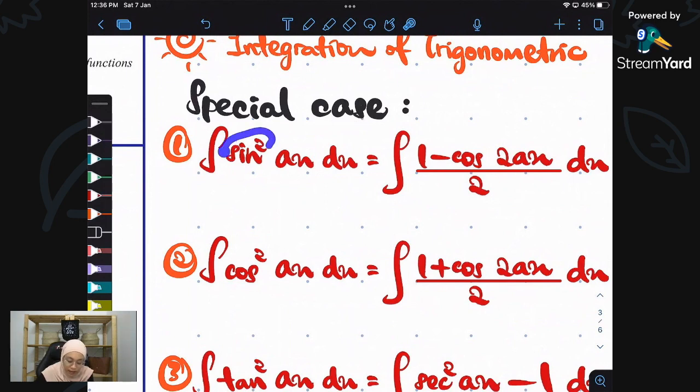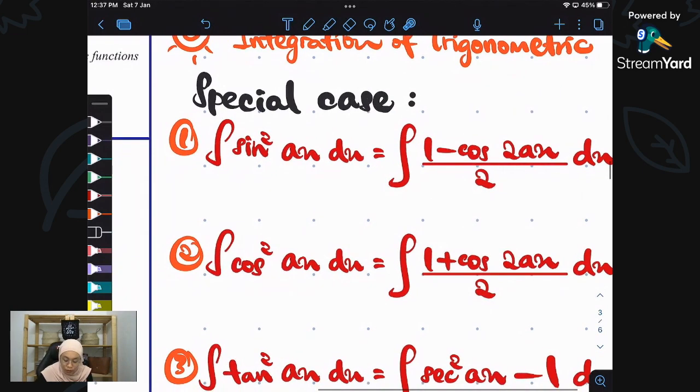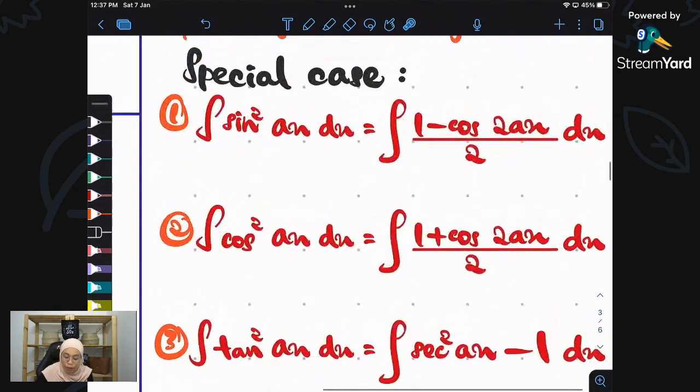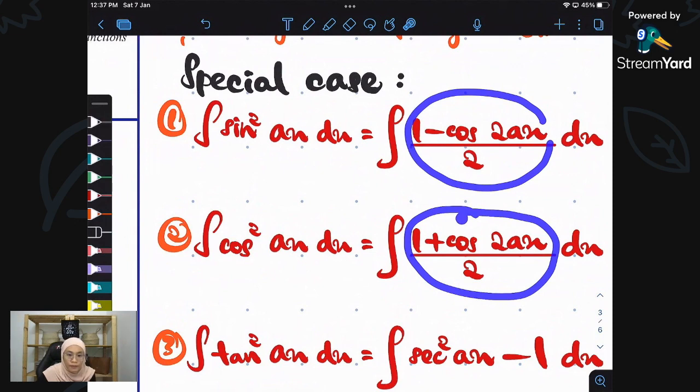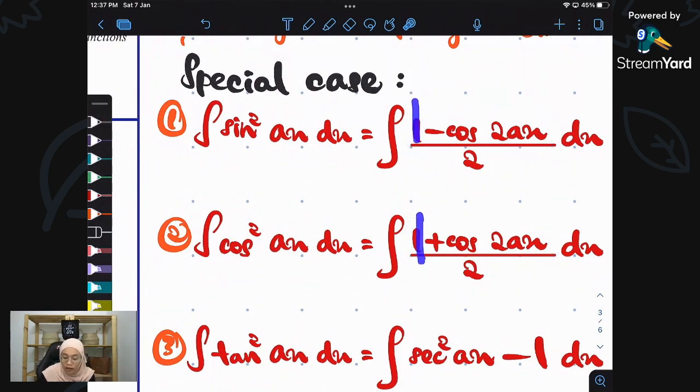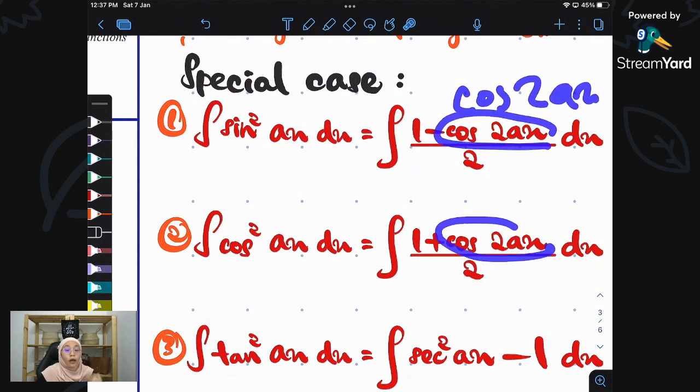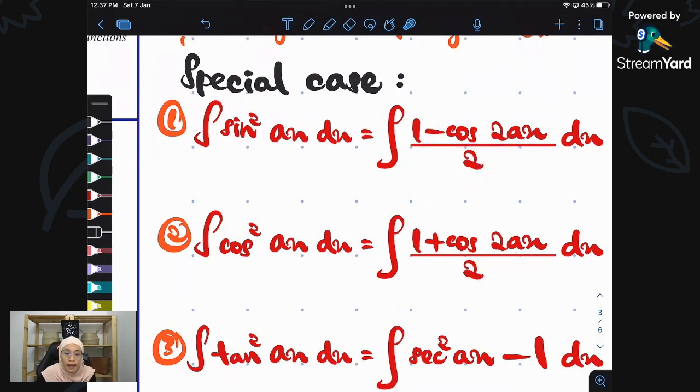Whenever we have integration of sine squared of a linear AX, we need to change it first so that it becomes 1 minus cos 2AX over 2. Same goes to this one: integration of cos squared AX is going to give you 1 plus cos 2AX over 2. So if you look at here, both formulas are almost the same. All the same except the operation of minus and plus.